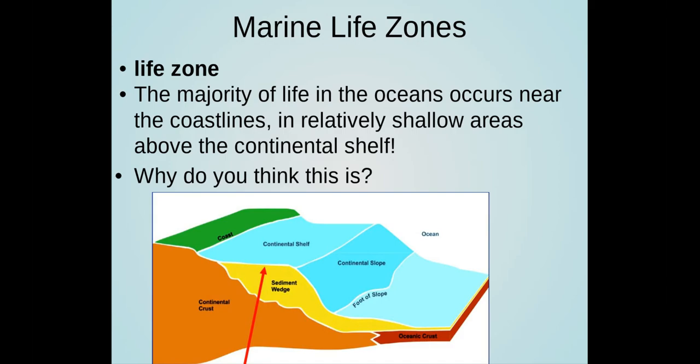A life zone is a region that contains characteristic organisms that interact with one another in their environment. The majority of life in the ocean occurs near the coastlines in relatively shallow areas above the continental shelf. Why do you think this is?